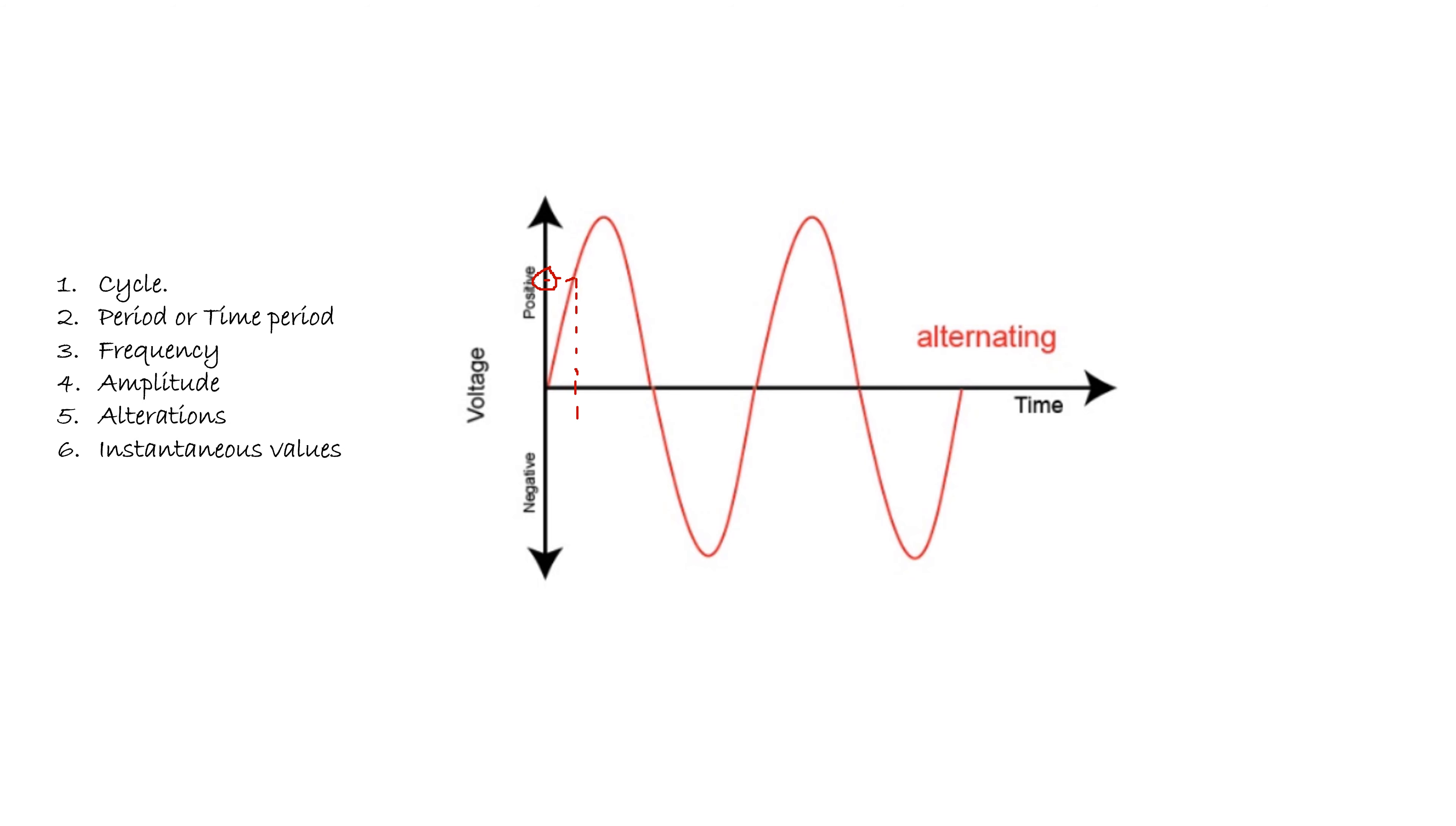There you get a value on the y-axis. Let us assume that value as V1 because we have considered a voltage waveform. At one second, the instantaneous voltage is V1. The strength of an alternating quantity existing in a circuit at a given instant is called the instantaneous value.